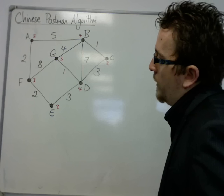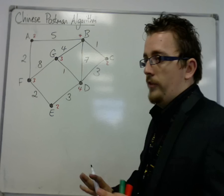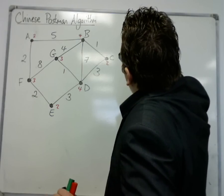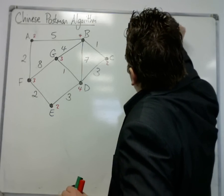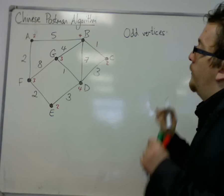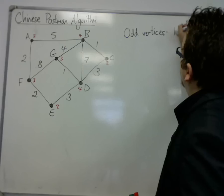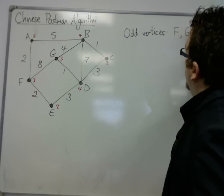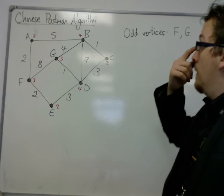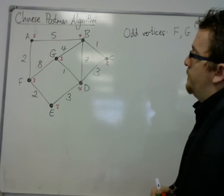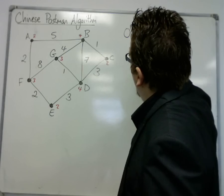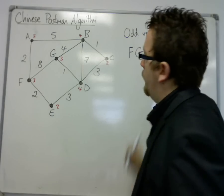The process of this: in any Chinese Postman Algorithm problem, first make sure you write down the odd vertices, and make it clear to the examiner that that is the first thing you do. So the odd vertices in this case are F and G. What we do is write down the shortest distance from F to G.